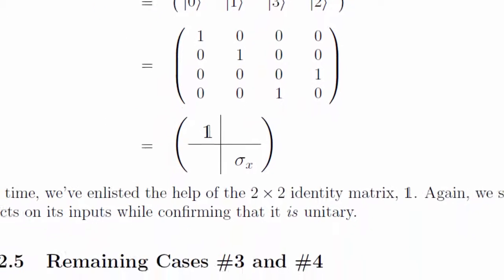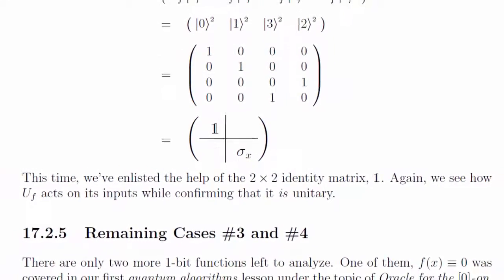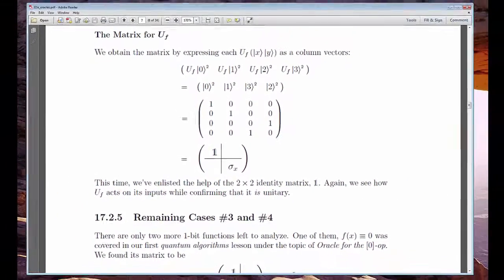By stepping back a bit, we can actually resolve u sub f as being composed of two smaller 2x2 submatrices: the identity, and sigma x, the Pauli-spin matrix for the observable S-x. This is more than just a casual observation, as you're about to learn.